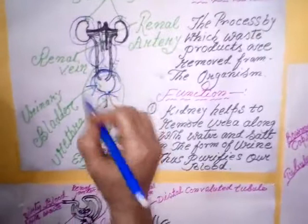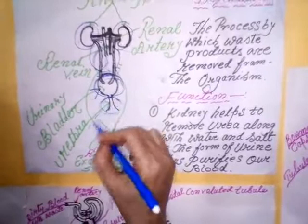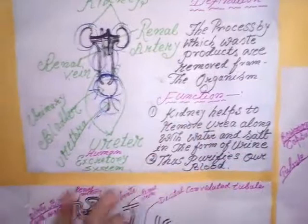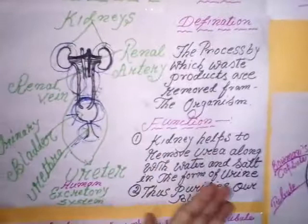Now, the function of the kidney. The kidney helps to remove waste products — urea — along with some water and salt from our body in the form of urine. Thus, it helps to purify our blood.